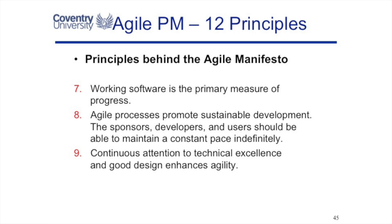Sustainable development in agile doesn't mean the green environmental type. It means we're not going to rush and work ourselves silly in the first month — we're going to work at a pace that's maintainable, that we will keep doing week after week. We're going to pace ourselves with a constant pace indefinitely. We're also going to have continuous attention to technical excellence, which enhances our agility — our ability to be nimble and to change.